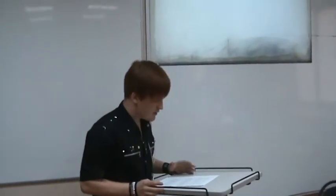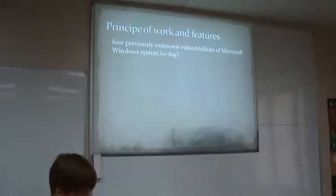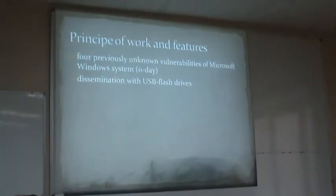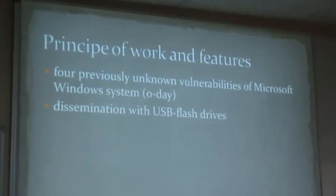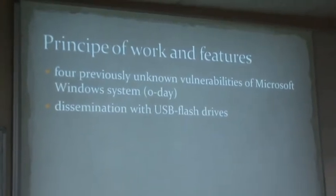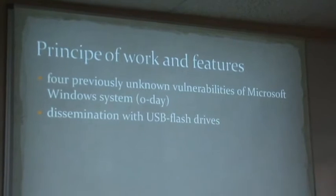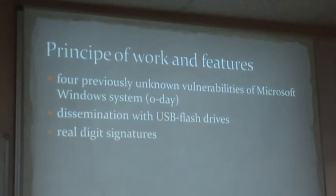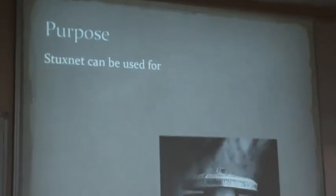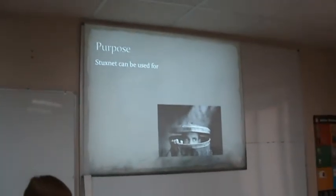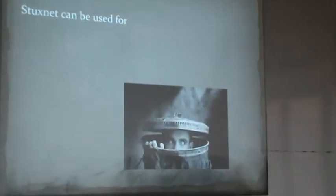Principles and features: this virus used four previously unknown vulnerabilities of the Microsoft Windows system, named as Zero Day, for infecting computers. Two of them were known but were used for study. These vulnerabilities are aimed at the virus dissemination via USB flash drives. Stuxnet escapes antivirus detection with the help of real digital signatures. This is the first known computer worm which intercepts and modifies the flow of information between programmable logic controllers Simatic S7 and workstations of the SCADA system.